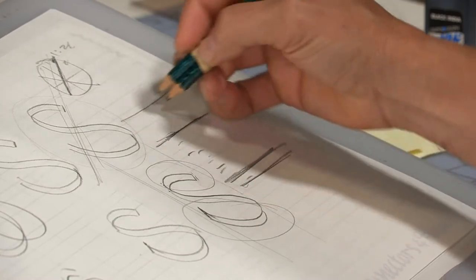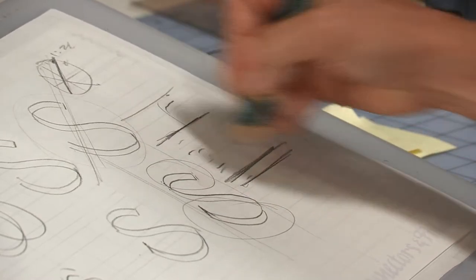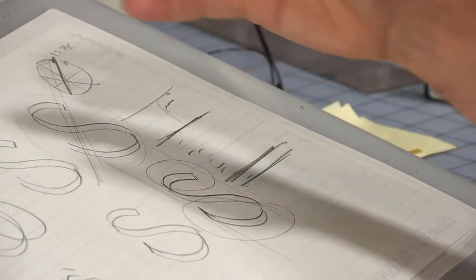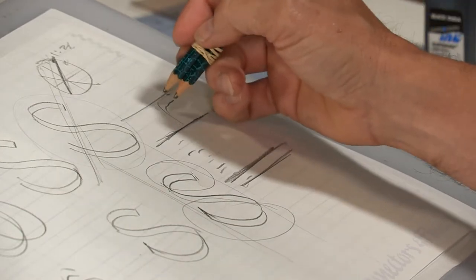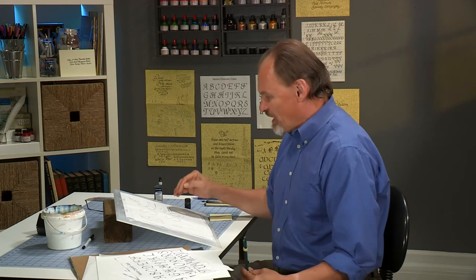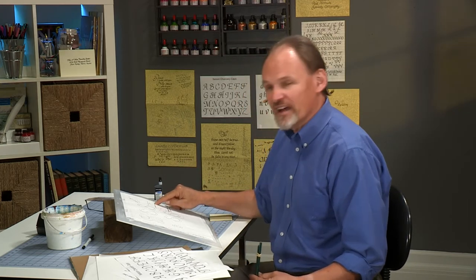But it's not as high as an ascender line on a tall letter. It doesn't go that high, it just goes a little bit above. In fact, there are two letters that are going to do this in the alphabet, that just go a little bit above this guideline.